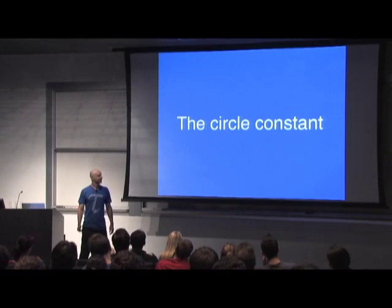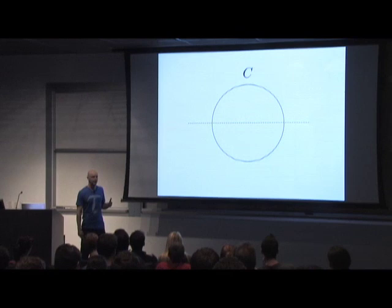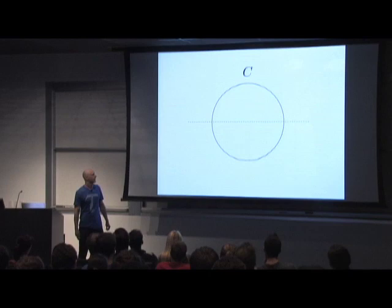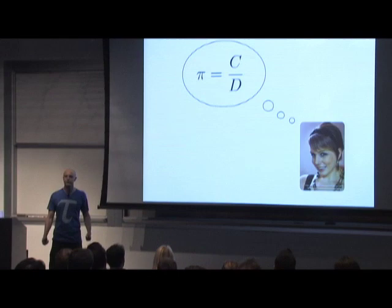Today we're going to be talking about the circle constant — the number that relates the circumference of a circle to its linear dimension. I'm being intentionally ambiguous here because it's not at all clear exactly what you might choose. In particular, there are two things you might look at. You might look at the diameter, in which case you might define the ratio of the circumference to the diameter. And, of course, this is pi.